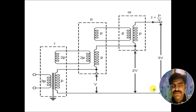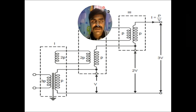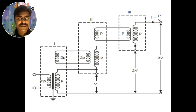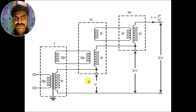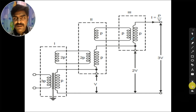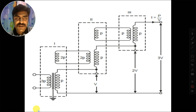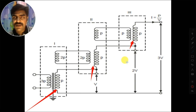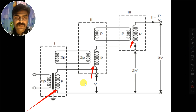Looking at the connection diagram, you can see there are three transformers. There is the secondary of the first transformer, the secondary of the second transformer, and the secondary of the third transformer. All these high voltage windings — the secondaries — are connected in series.